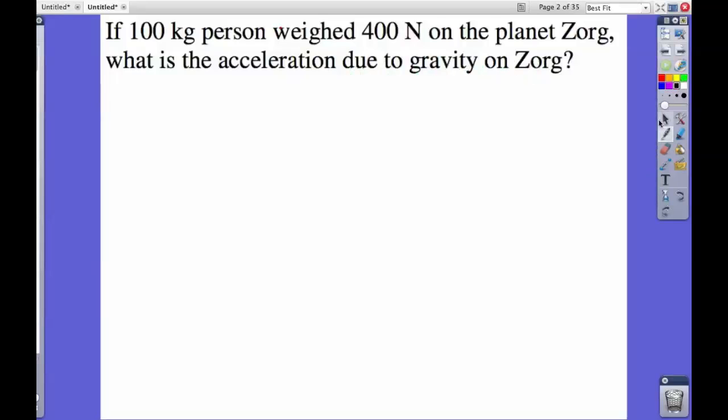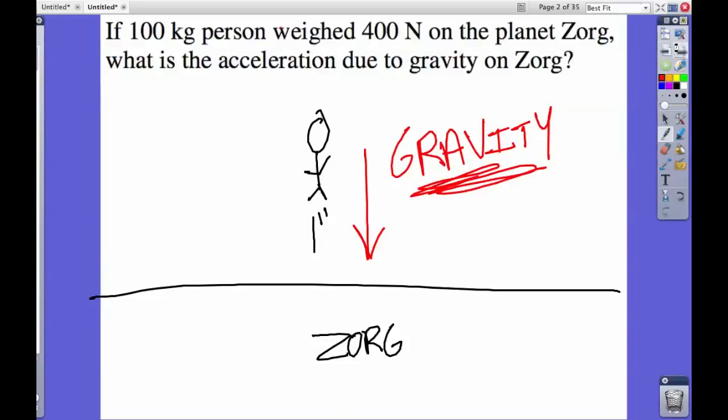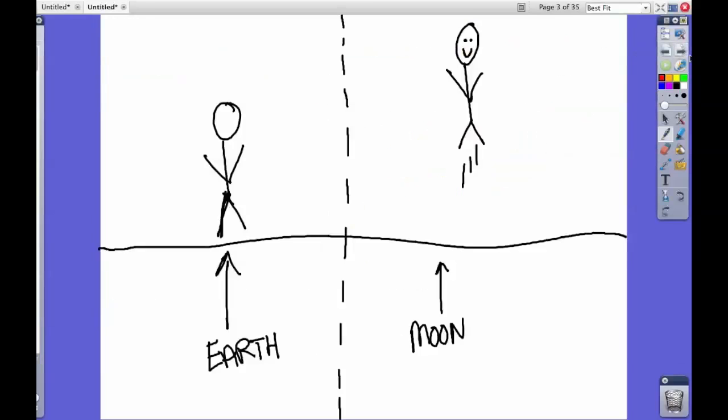What we have here is a person jumping up in the air on planet Zorg. We want to know what is the acceleration due to gravity that will pull him back down to Zorg. Here's an example of me. I know, it's a great drawing.